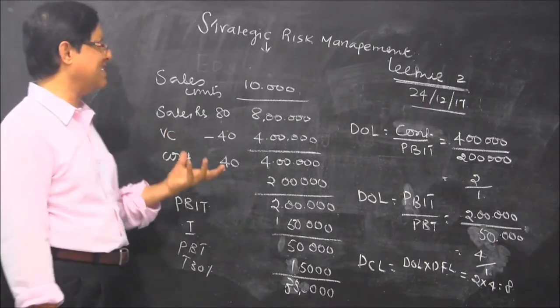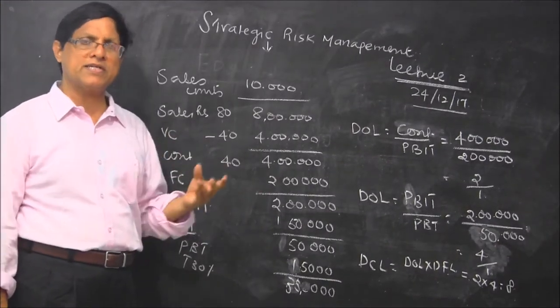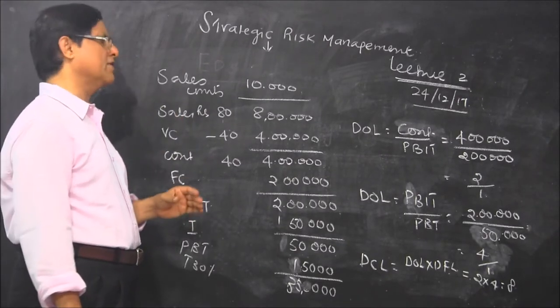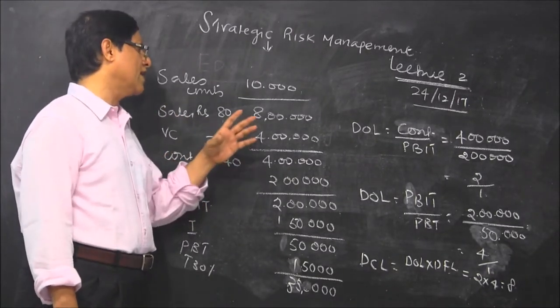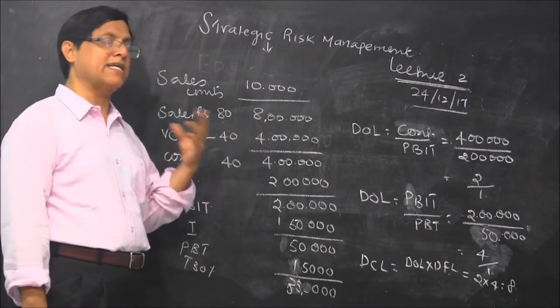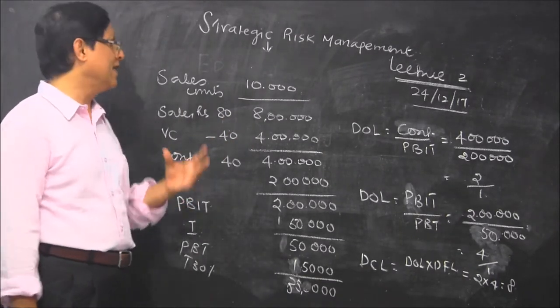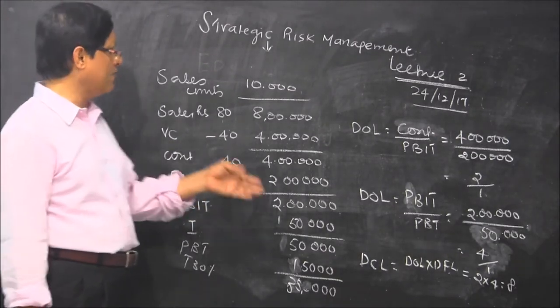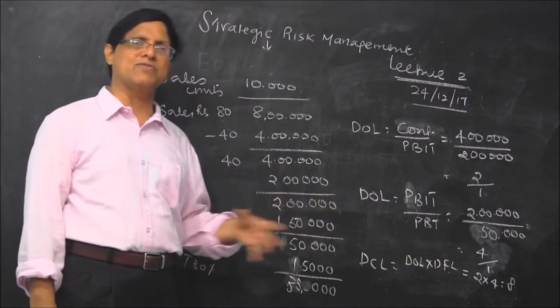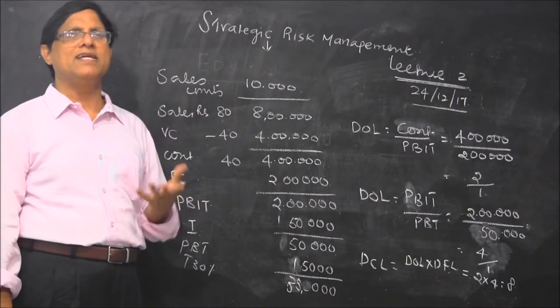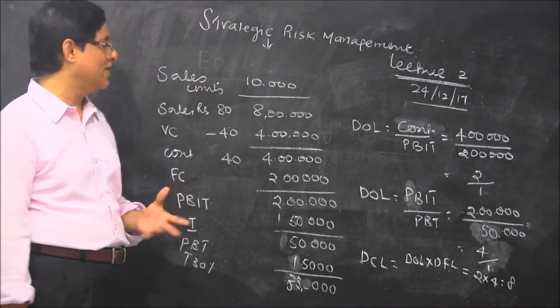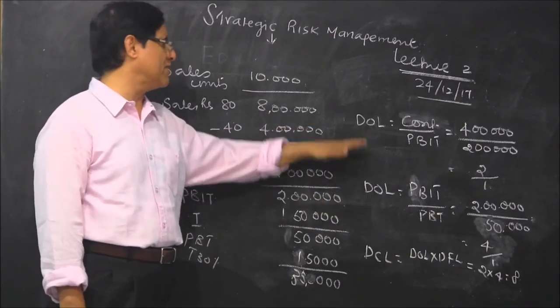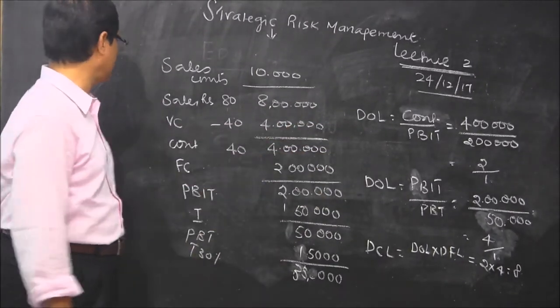Now we are talking about measuring that risk. We discussed in the earlier lecture that there are two types of risks. One risk arises on account of fixed cost, known as business risk - it is an unavoidable risk. Another one is the interest risk which arises on account of raising funds by paying interest. Both of them are measurable using this formula.